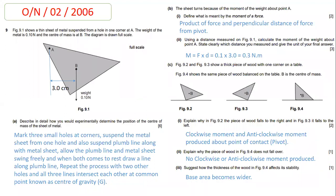In part 2, the examiner asks you to measure a distance and find the moment of the weight about point A. The weight is given, but the perpendicular distance of the weight from the pivot is missing. You draw a line from point A and measure the perpendicular distance using a ruler, which is 3 cm. Using the formula moment = force × perpendicular distance, you multiply 0.10 N by 3 cm to get a moment of 0.3 Newton-centimetres.